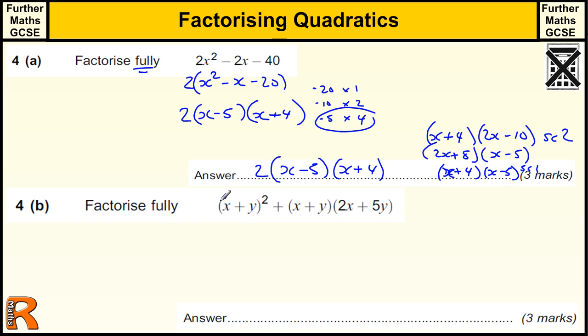OK, so here's another question. We've got (x + y)² plus (x + y)(2x + 5y). Now, I would often, or I would tell you to, when you see (x + y) all squared, quickly write that out as a double bracket, because quite often people forget what that actually means.